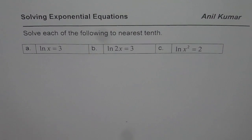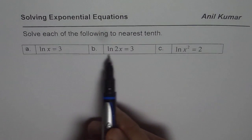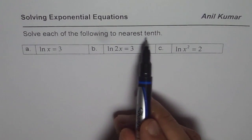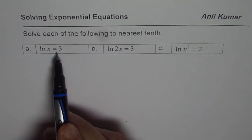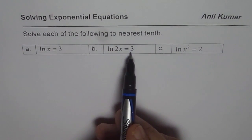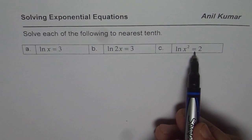In this particular example, we need to solve each of the following and write the answer to the nearest tenth. First question is ln x equals 3, then ln 2x equals 3, and ln x squared equals 2.